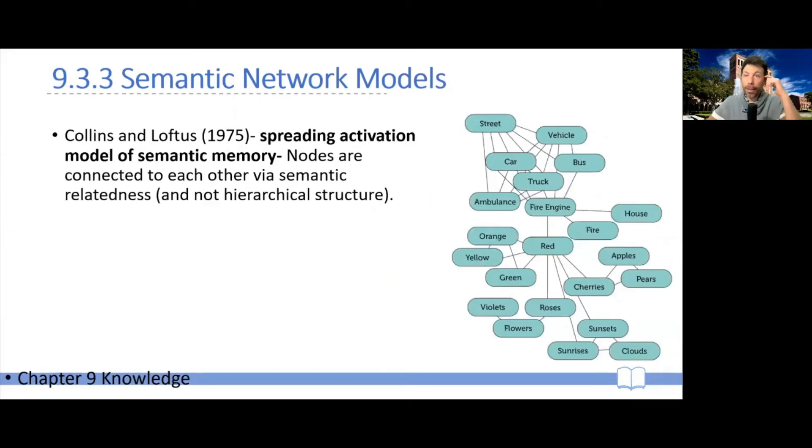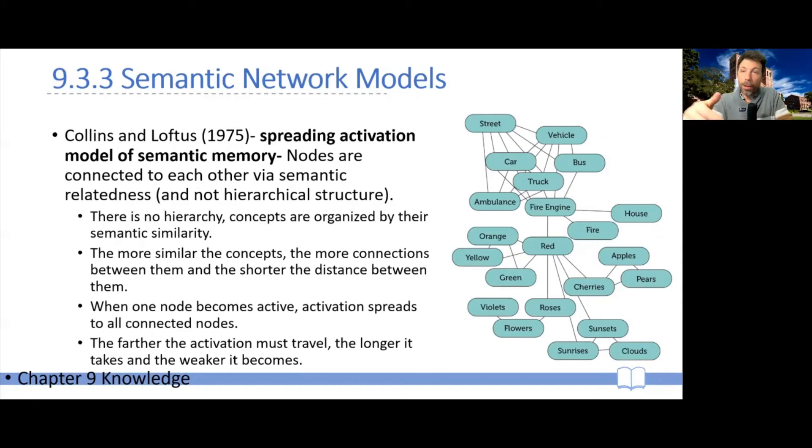And for this reason, Collins and Loftus developed a variant or a different version of the model, which they refer to as the spreading activation model. And the idea is that, again, our knowledge might be implemented as nodes that are connected to each other, but the hierarchy is completely gone. And now the nodes that are closer to each other are nodes that are semantically related. The idea is that the more semantically similar nodes are, the more connections there will be between the two of them and the shorter the distance between the two of them in the network.